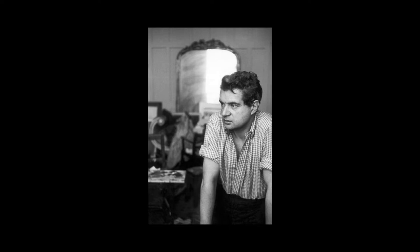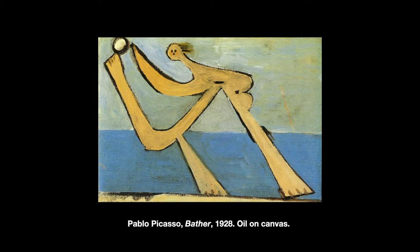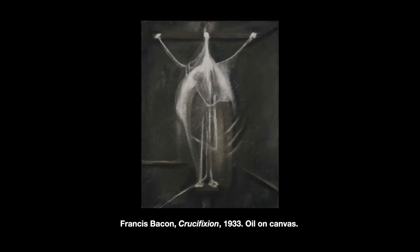In 1927, at age 18, Bacon began living on his own, moving between London, Berlin, and Paris. While in Paris, he saw multiple art exhibits, including a 1928 Picasso exhibition at Paul Rosenberg's Gallery. Bacon is quoted as saying that upon seeing Picasso's work, he thought to himself, "Well, I will try and paint too."